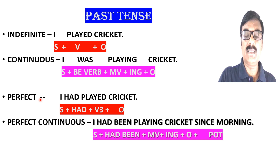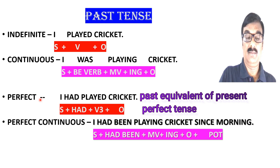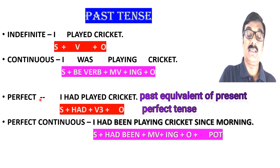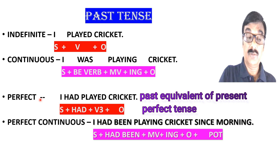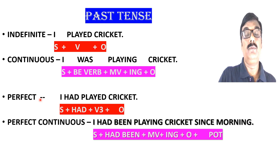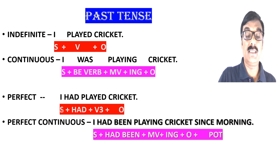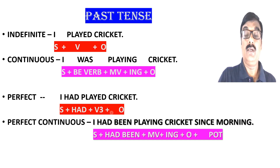Next is past perfect tense. When some action started in the past, is already over, and whose outcome is present, we use past perfect tense. The structure is: Subject + had + V3 (third form of the verb) + object. Example: 'I had played cricket' — this is past perfect tense.